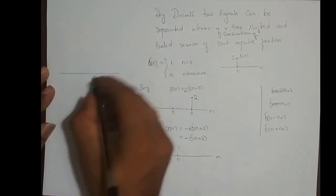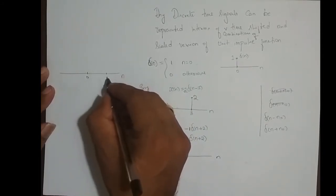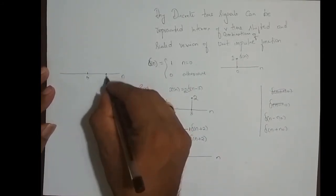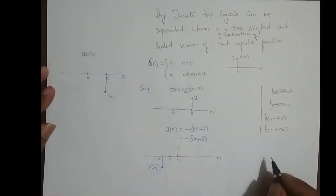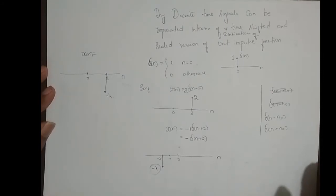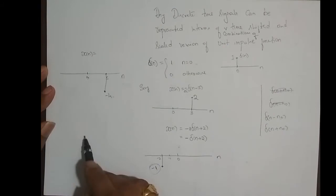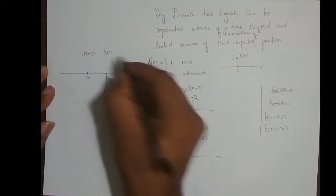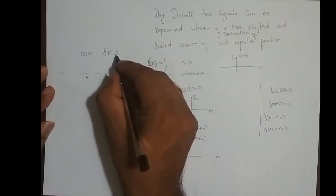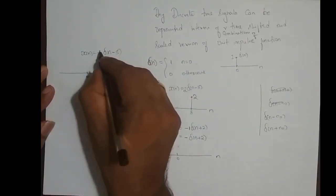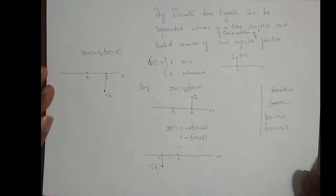Say I need a sample at n equal to 5 and I want its amplitude to be minus 4. How do I represent this in terms of the unit impulse function? It is nothing but delta of n shifted right five times, and its amplitude scaled by a factor of minus 4. Delta of n shifted right means delta of n minus 5, and its amplitude is scaled by minus 4. So this is nothing but minus 4 times delta of n minus 5.